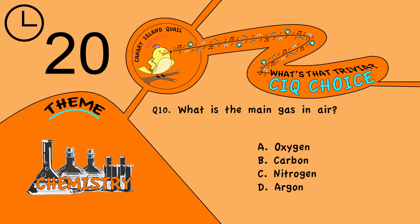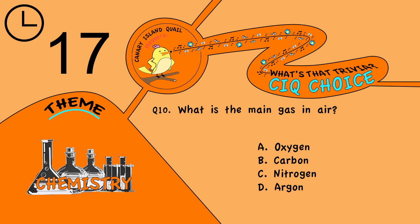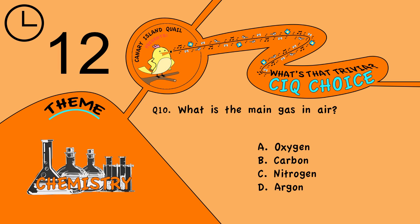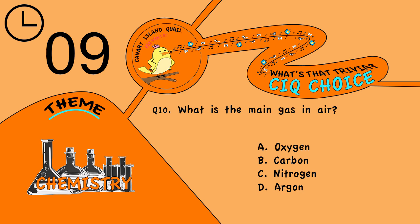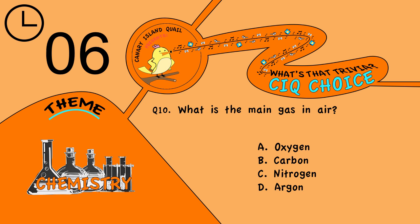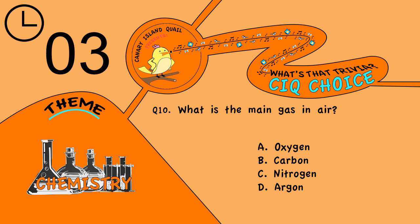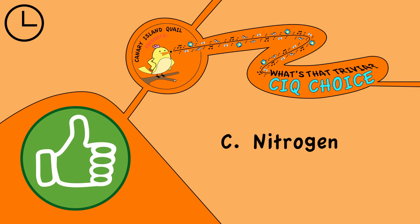Question 10. What is the main gas in air? Is it A, oxygen; B, carbon; C, nitrogen; or D, argon? The answer is C, nitrogen.